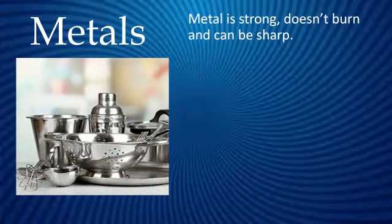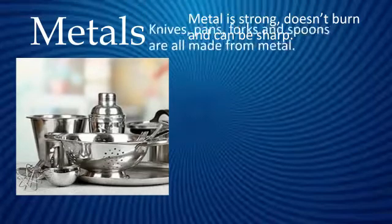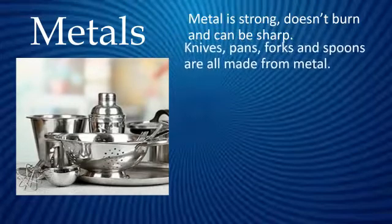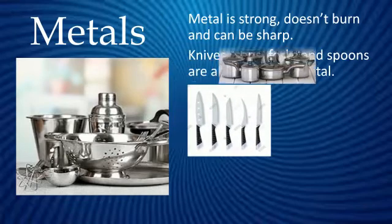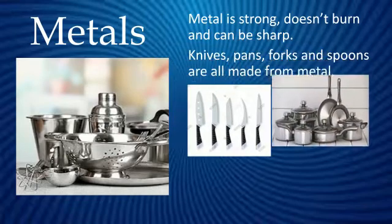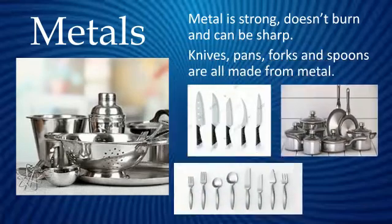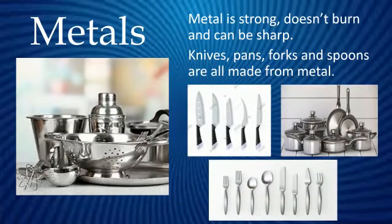Metal is strong, doesn't burn, and can be sharp. Knives, pans, forks, and spoons are all made from metal.